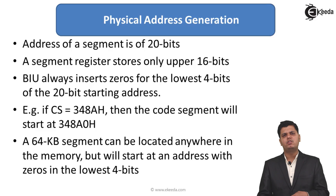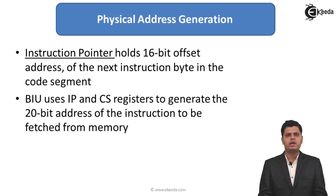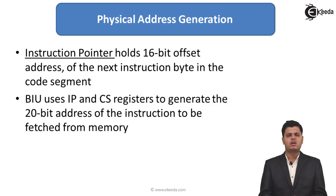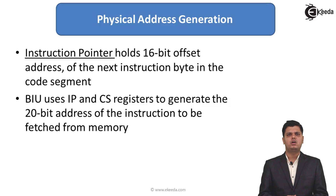A 64-kilobyte segment can be located anywhere in memory but will start at an address with zeros in the lowest 4 bits. This means 64KB segments can start at any location, but the mandatory condition is that the last 4 bits of the physical address must be zeros. For accessing individual bytes within the code segment, another register is used — the instruction pointer — which holds the 16-bit offset address of the next instruction byte in the code segment.